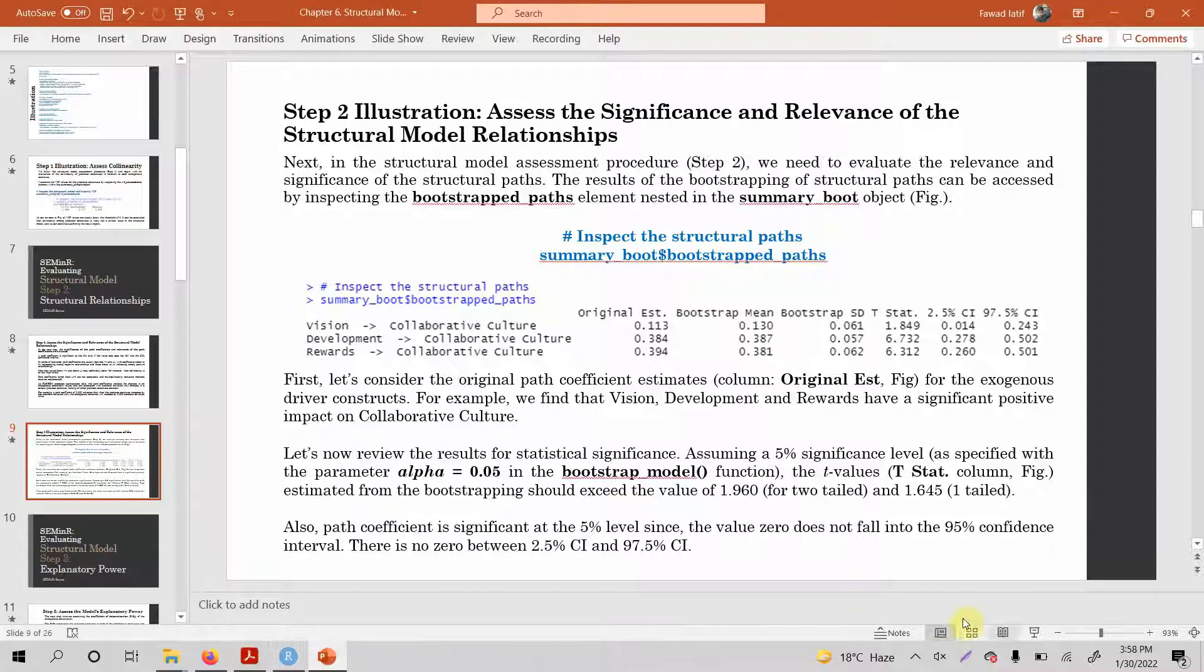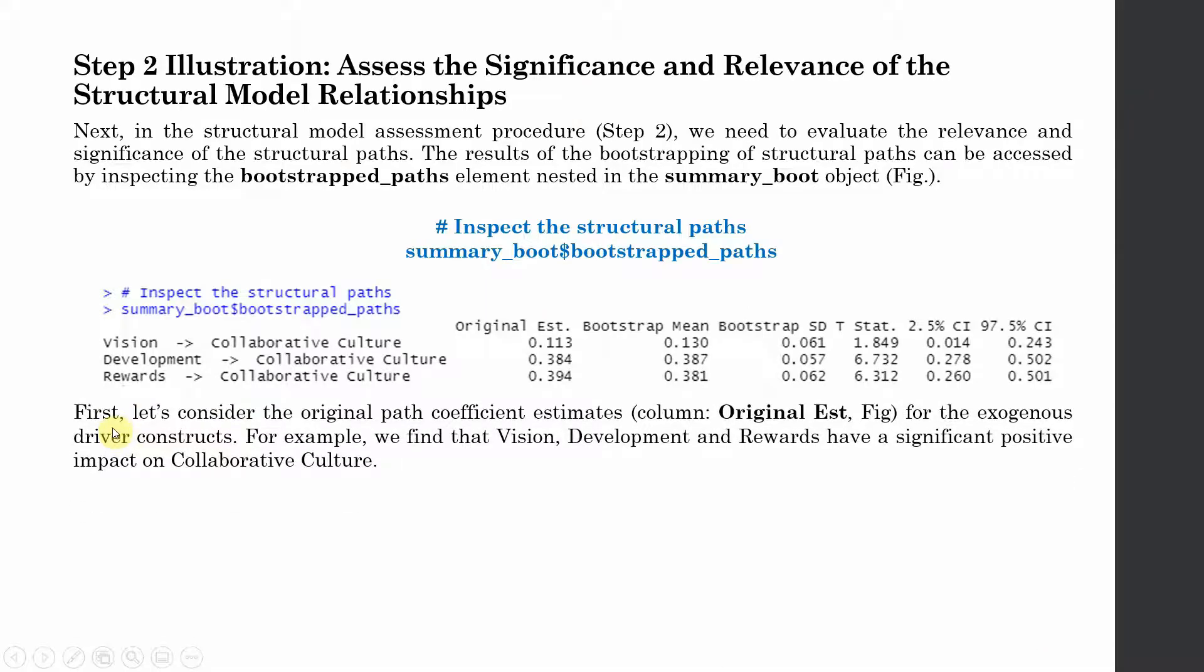First, let's consider the original path coefficient estimates, this column here, for the exogenous driver constructs. For example, we find that vision, development, and rewards have a significant positive impact on collaborative culture. Yes, the impact is positive. But is it significant? For that, you will have to look into your t statistics and this bias corrected confidence interval.